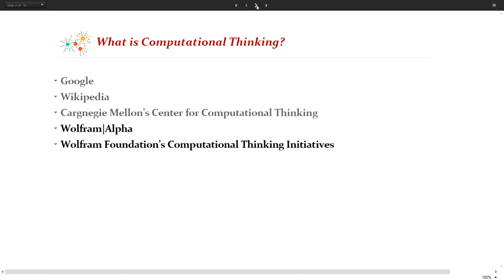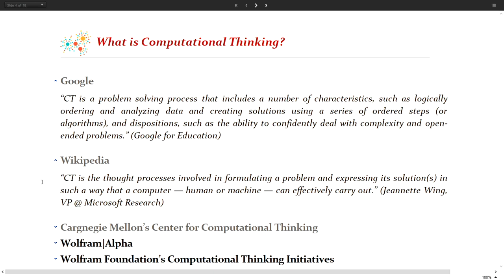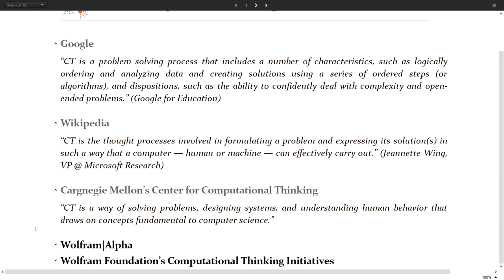The term computational thinking is quite recent, and as such its definition has been and is still evolving. There are some organizations that have defined it. Google defines computational thinking as a process of problem solving that includes a variety of things. The first Wikipedia hit is Janet Wing's definition: computational thinking involves thought processes in formulating a problem and expressing its solutions in such a way that a computer, human, or machine can effectively carry them out. Carnegie Mellon defines it as a way of solving problems, designing systems, and understanding human behavior drawing on concepts from computer science.